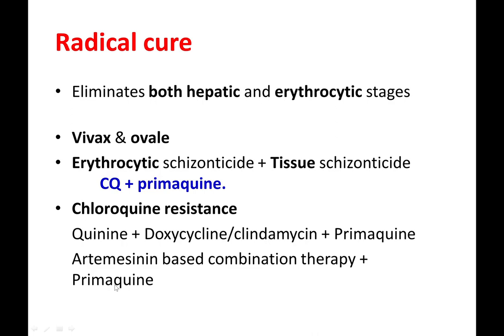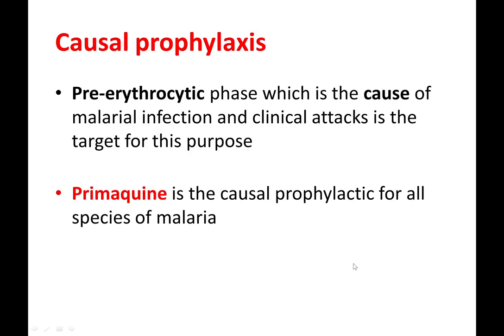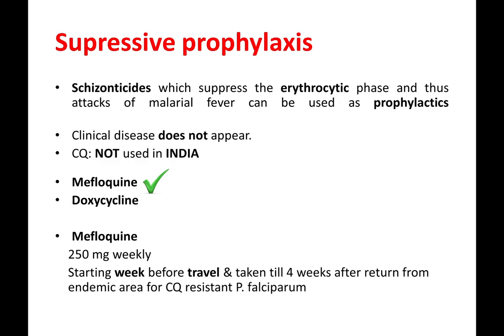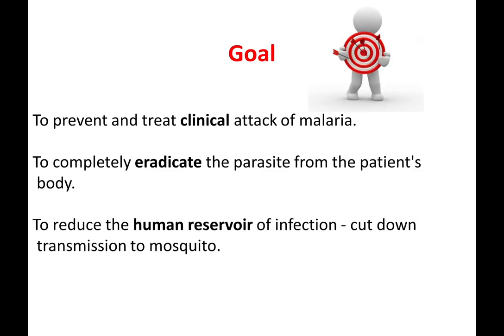The first part is the blood schizonticide and the second is the pre-erythrocytic or liver schizonticide. Causal prophylaxis targets the pre-erythrocytic phase and primaquine serves best for this purpose. Suppressive prophylaxis uses schizonticides which suppress the erythrocytic phase to eliminate clinical attacks of malarial fever and is used as a prophylactic. Chloroquine is no longer used in India for this purpose due to resistance, but mefloquine and doxycycline are used — mefloquine at 250 mg weekly.